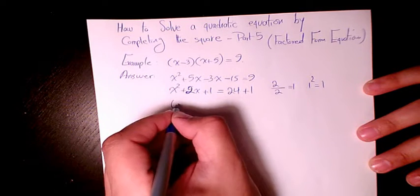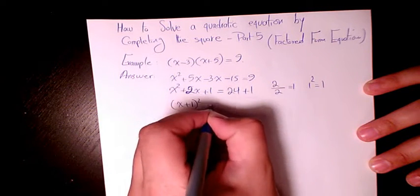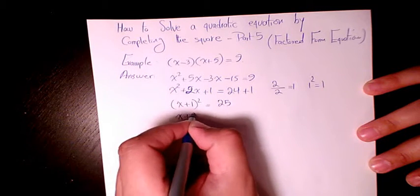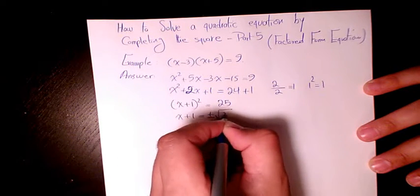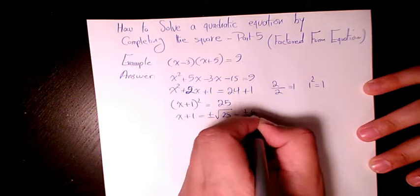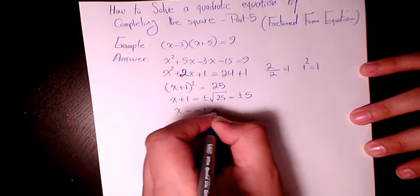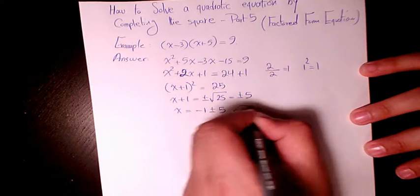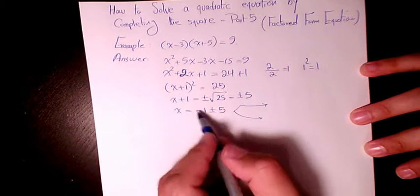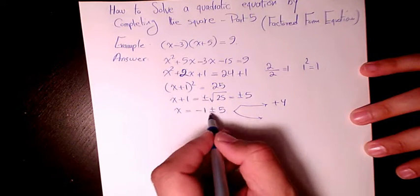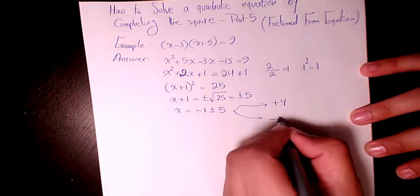So that will be x plus 1 to the power of 2, and here will be 25. So x plus 1 will be plus minus square root of 25, or plus minus 5. So x will be negative 1 plus minus 5, which will be two answers. When we have negative 1 plus 5, it's going to be plus 4. Negative 1 minus 5 is going to be negative 6.